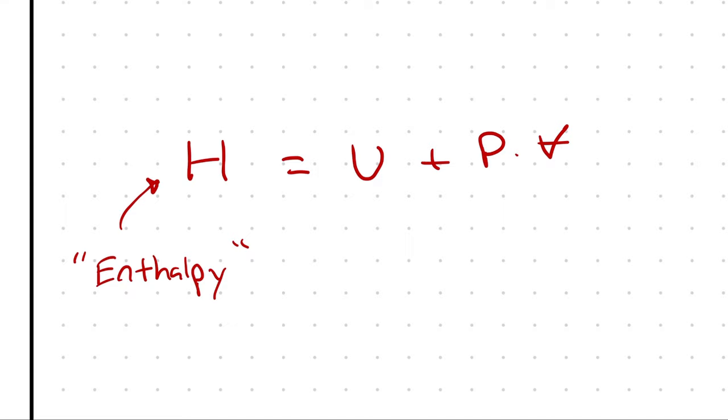You can think of enthalpy as a representation of the total energy of the system. That's the internal energy, but also it takes into account the properties of the situation of the system, its kinetic potential energy, are represented in that pressure and volume.